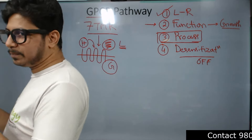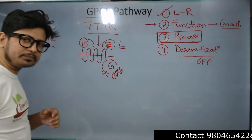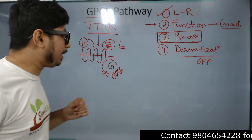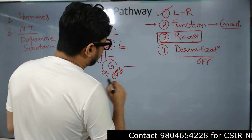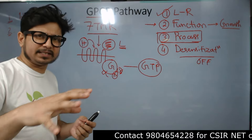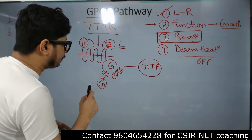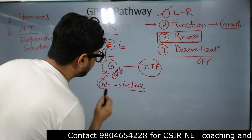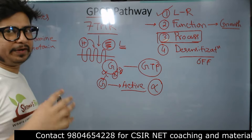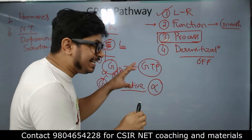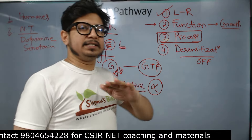Once G-protein associates itself to the GPCR receptor, the G-protein has three subunits — alpha, beta, and gamma. The alpha unit is the biggest; beta and gamma are smaller units. Whenever a ligand binds to the GPCR, G-protein binds to the GPCR from the cytosolic side. Whenever GTP binds to G-protein's alpha unit, the G-protein becomes active. Until or unless this alpha unit of G-protein gets activated, GPCR signaling is not triggered.